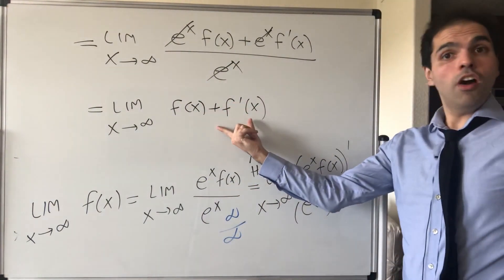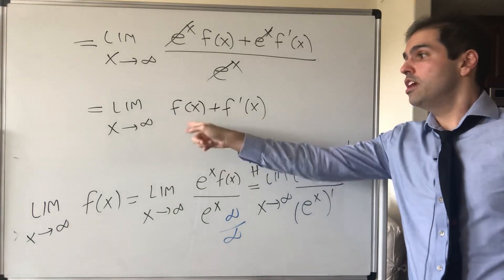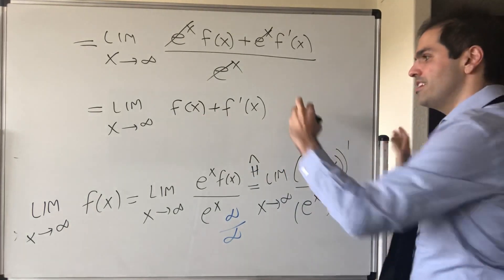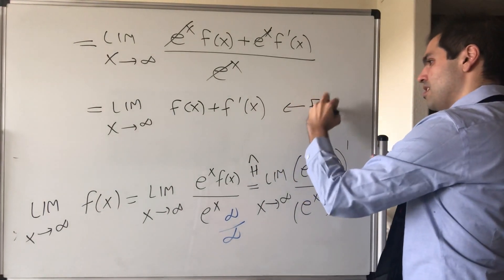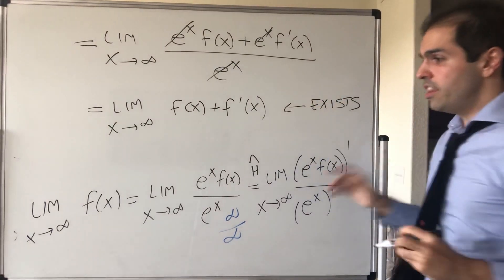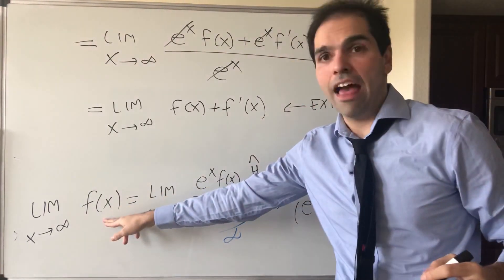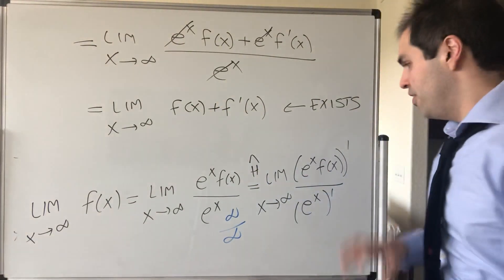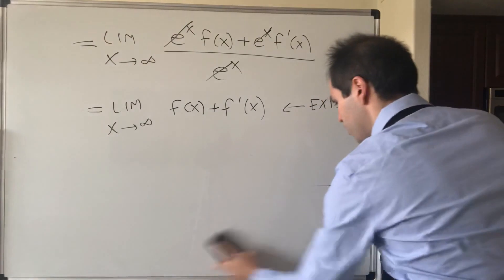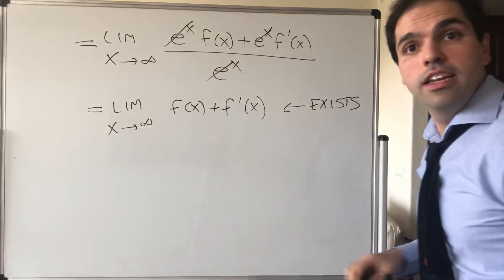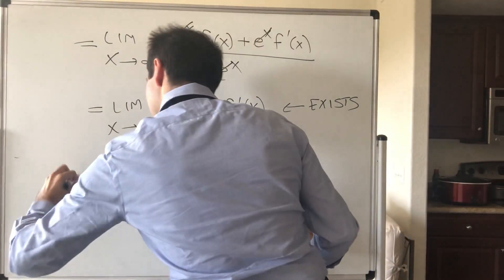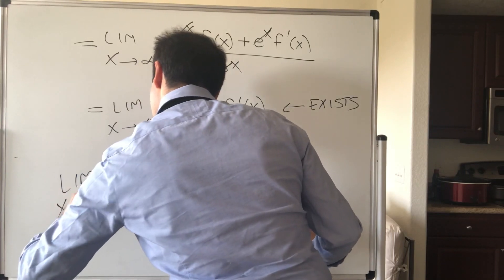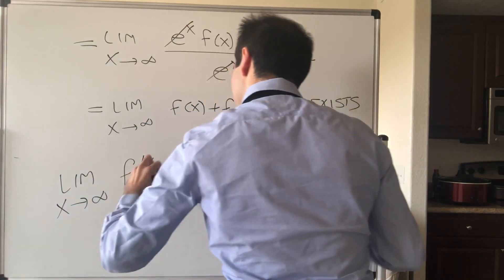Now, this would be a problem if this goes out to infinity, but by assumption, we know that this exists. So in the end, we find the limit of f is the same as the limit of f plus f prime, and that will allow us to conclude, because what's the limit of f prime of x?